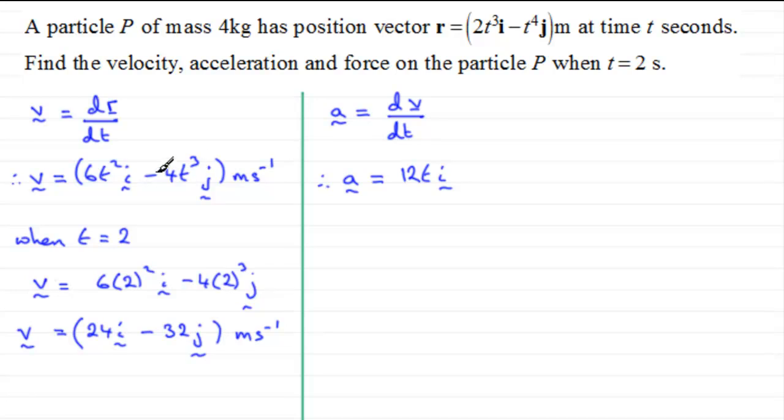And then, same again for this, we're going to get minus 4 times 3, which is minus 12. Reduce the power by 1, and you go down to 12t squared in the j direction. And in general, this will be measured in meters per second per second.